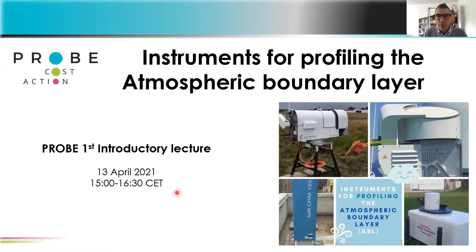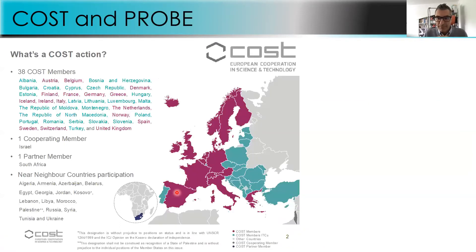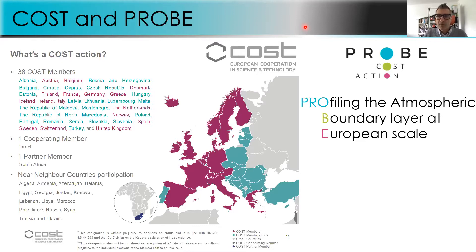Today we introduce the instrument for profiling the atmospheric boundary layer. Since we have a heterogeneous audience, let me first introduce you to COST and PROBE. COST is a European funding scheme for cooperation in science and technology — it provides funding for cooperation between scientists in different member states. It doesn't provide money for actual science, but just for networking and cooperation. A few years ago we submitted the proposal for PROBE, which stands for Profiling the Atmospheric Boundary Layer at European Scale, and it started about two years ago and will go for a bit more than two years from now.